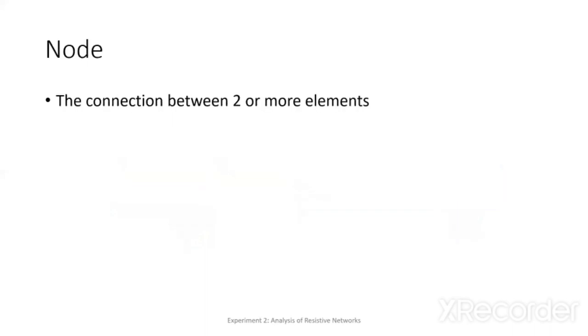Next one is node. For node, it is called the connection between two or more elements. The junction between two or more elements is called a node.